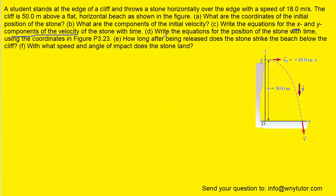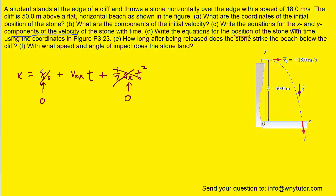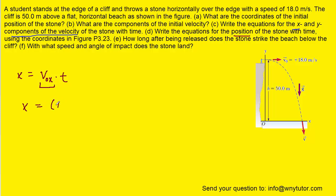For part D, in order to write the equation for the position of the stone with time, we consider the position equation from kinematics. The initial X position was 0 and the acceleration in the X direction is 0, so those terms drop out. Plugging in the initial velocity in the X direction — positive 18 meters per second — the equation for position in the horizontal or X direction as a function of time becomes X = 18t.